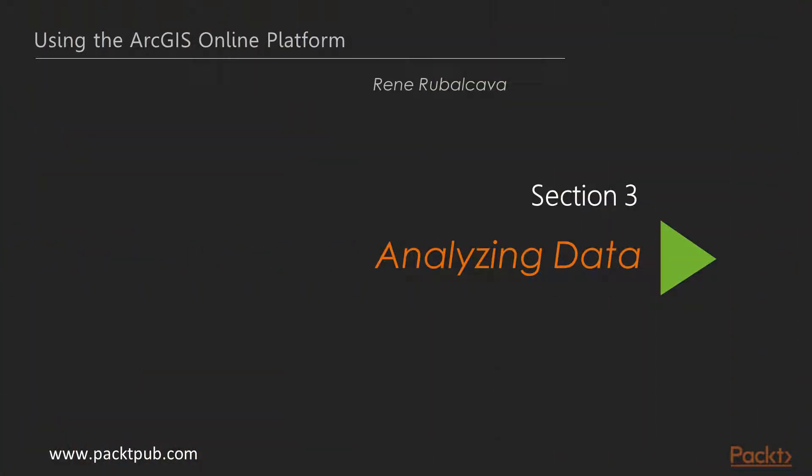Welcome to Section 3, Analyzing Data. In the previous section, we looked at how you could upload data into ArcGIS Online, as well as different types of data you can upload, whether it be shapefiles or a GeoJSON file. We also looked at how easy it was to create a hosted feature service from the data that we upload, so we can work with it inside of our web maps. Then we went a step further and looked at how we can add extra value to that data by using the geo-enrichment tools available inside the ArcGIS Online platform, and we looked at some of the options available when using those tools.